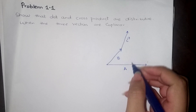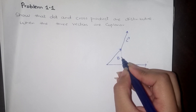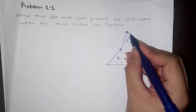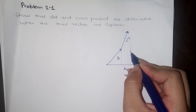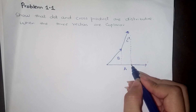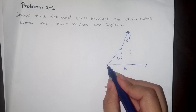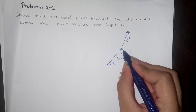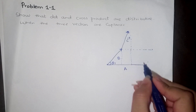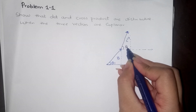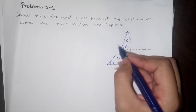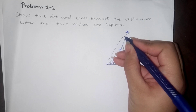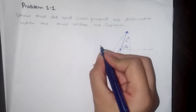If I draw a projection of this vector, it will be this way. If I draw a projection of vector C, it will be this way. If I draw a projection of vectors B and A, it will be this way. And if I extend this plane, it will be this way — this will be the axis.